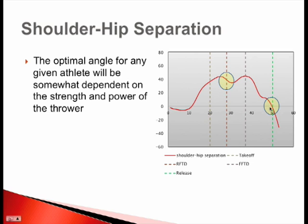Now note here at release — what we're actually seeing is that the athlete is achieving a value that is almost zero. So at the moment of release, the athlete's shoulders are almost in a neutral position. This indicates that this particular athlete maximized this kinetic linking phenomenon, because this neutral shoulder position is actually somewhat indicative of the strong blocking action that is so important for transferring momentum.